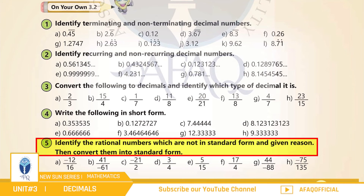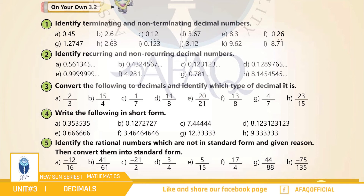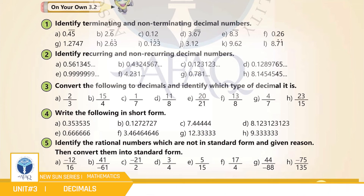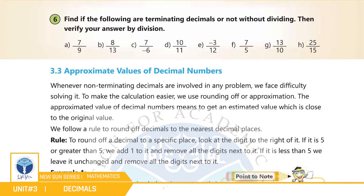Question number 5: Identify the rational numbers which are not in standard form, give reasons, then convert them into standard form. (a) −12/16 — یہ standard form میں نہیں ہے کیونکہ 12 اور 16 کے factors more than 1 ہیں۔ اب −12/16 کو standard form میں convert کرنے کے لیے دونوں numbers کو same divisor سے divide کریں — 4 دونوں numbers کو divide کر سکتا ہے۔ 4 سے divide کرنے کے بعد standard form آیا: −3/4۔ اسی طرح سے اگلے parts آپ نے خود حل کرنے ہیں۔